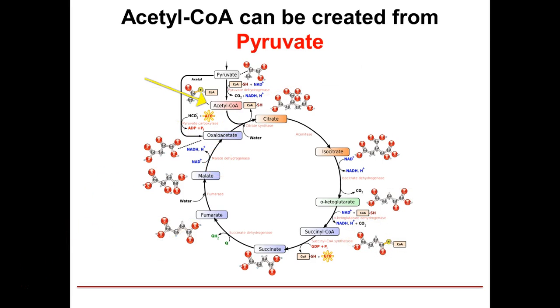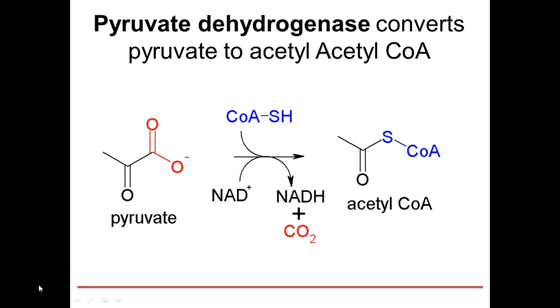One of the key molecules is acetyl coenzyme A. Acetyl coenzyme A can be generated from pyruvate, and the enzyme that does this is pyruvate dehydrogenase. Its role is to convert pyruvate to acetyl coenzyme A. In the process of doing that, it releases another NADH.